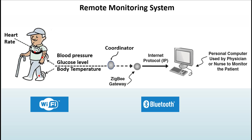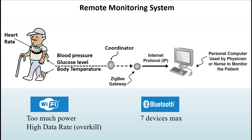You might wonder why we can't use Wi-Fi or Bluetooth for these devices. Wi-Fi uses a lot of power, which is bad for battery-powered devices or sensors where low power consumption is important. Also, all these devices use low data rate, so Wi-Fi's high data rate is overkill. Bluetooth is also not a good fit because it can only support a maximum of seven devices, while Zigbee is designed to support hundreds.